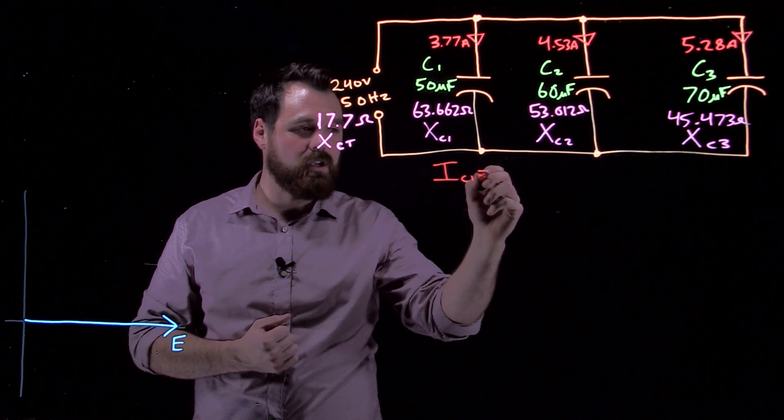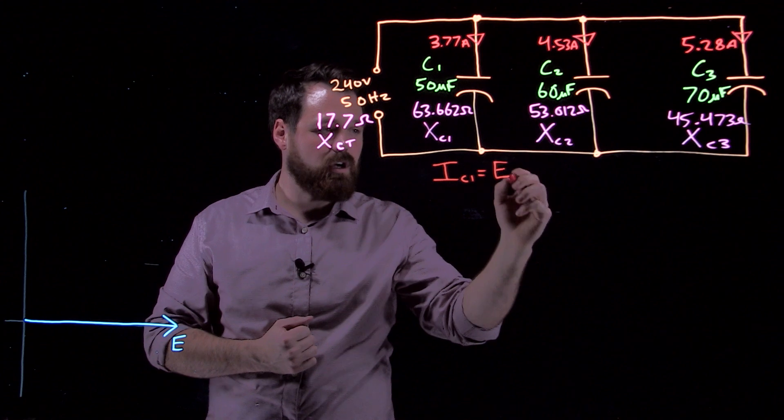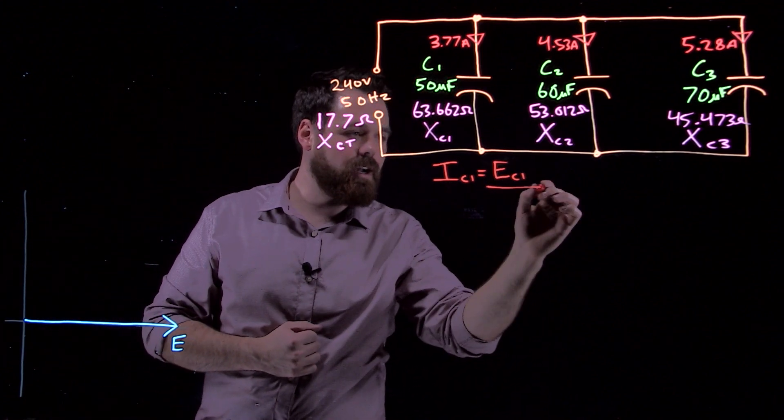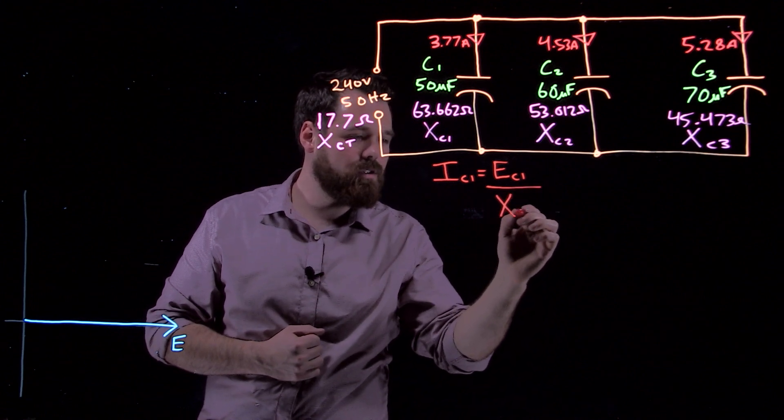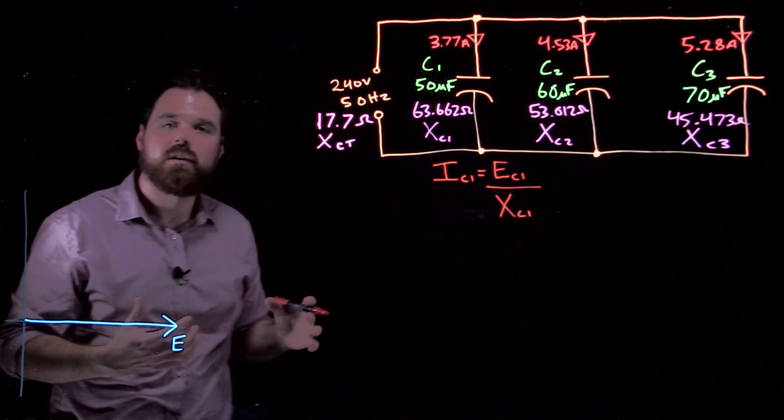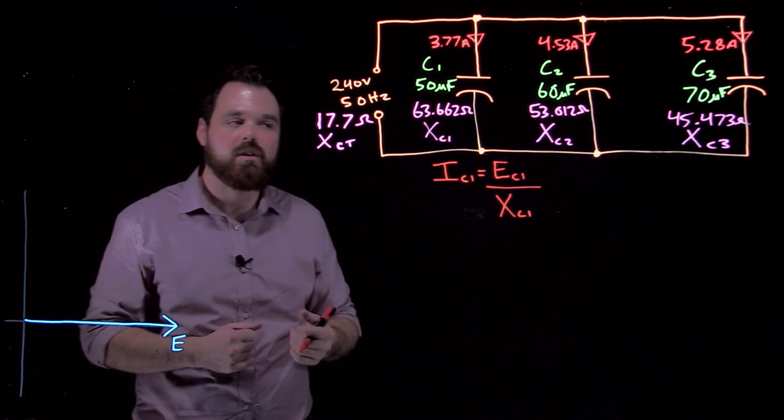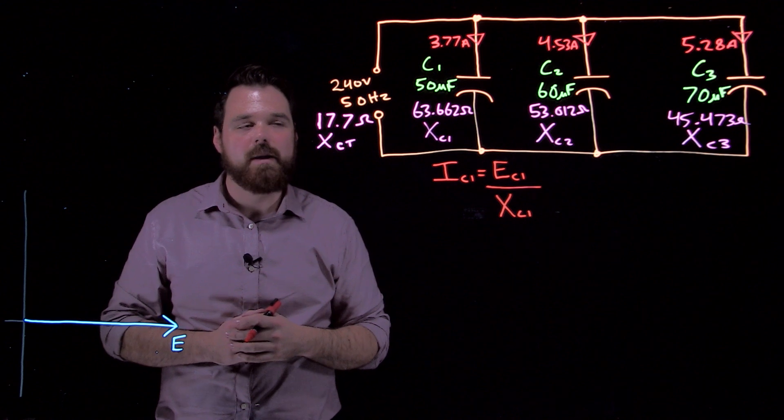We know that's going to be the voltage of capacitor one, which we know is the same as our source voltage, divided by the XC of capacitor one. Volts divided by ohms is our basic Ohm's law. In this case, it gives us 3.77 amps. So I did that for capacitor one.